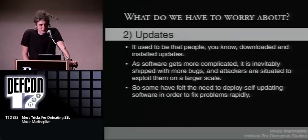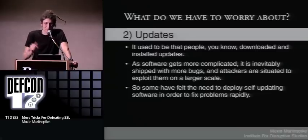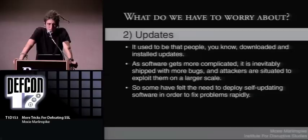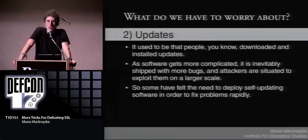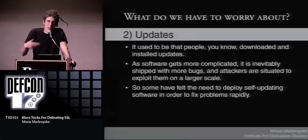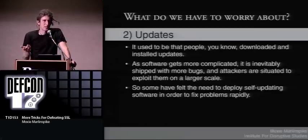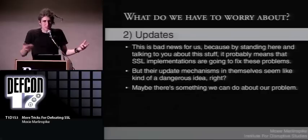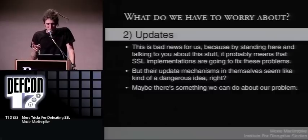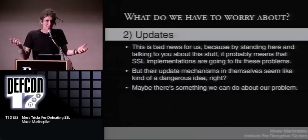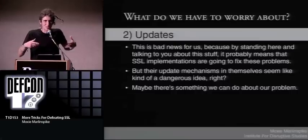Third cut: we have an OCSP-aware SSL Sniff. We do everything before, and now if we see an OCSP request for any of the URLs embedded in the forged certificates we're using, we man-in-the-middle that and send back three. So even if the certificates get revoked, no one will ever know. The other thing to worry about is updates — just by talking about this today, people are probably going to try and fix it. It used to be that people downloaded software, but now with more and more bugs and more at stake, a lot of people have deployed self-updating software. That means things get patched quicker, but those update mechanisms might be a dangerous idea — you have software out there that's just connecting somewhere, downloading stuff, and running it.